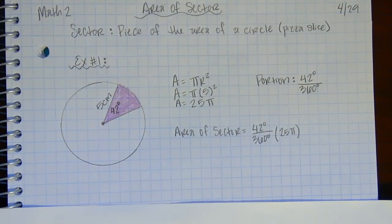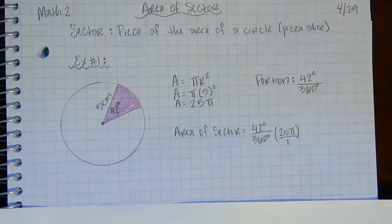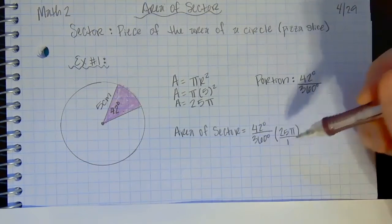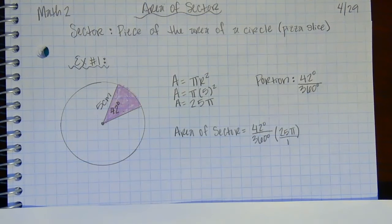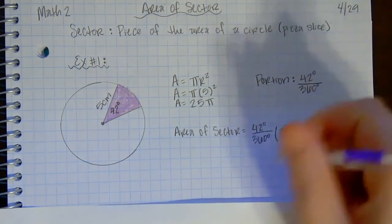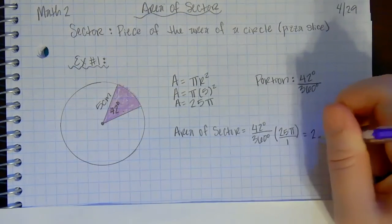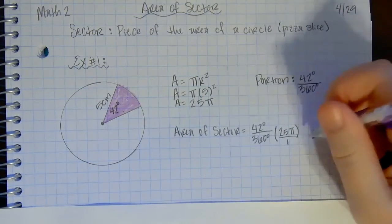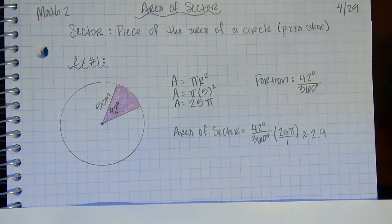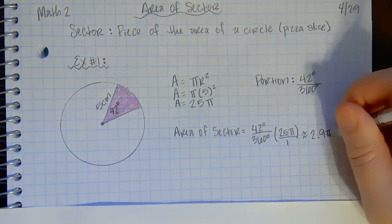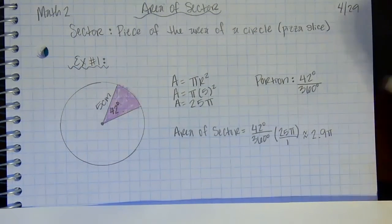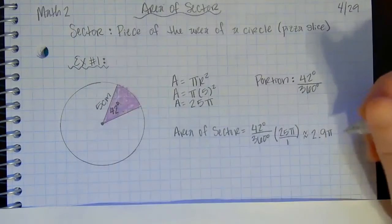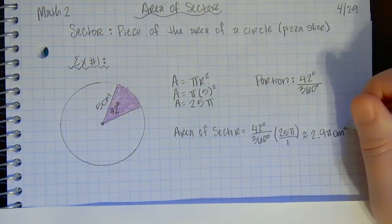When I multiply, I put 25π over 1. In my calculator I go 42 times 25, then divided by 360, and that gives me a decimal — so that's approximately 2.9. If I'm leaving it as a decimal, make sure you use the approximate symbol, and remember to include π since I was multiplying it. The units are centimeters, and since it's area, the units are centimeters squared.